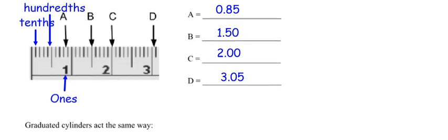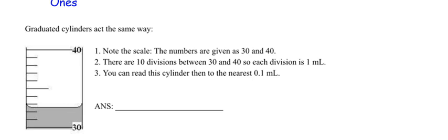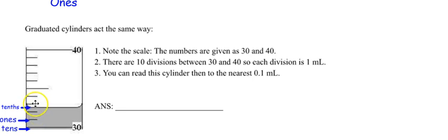Now graduated cylinders — they are read in the exact same way. What is the scale on this graduated cylinder? These are the tens, so tens → ones → tenths. You're going to read this to the nearest tenth. This is 30, 31, 32, 33 — so it's between 32 and 33, giving 32.5. Notice I only read to the nearest tenths here because the scale starts in the tens.